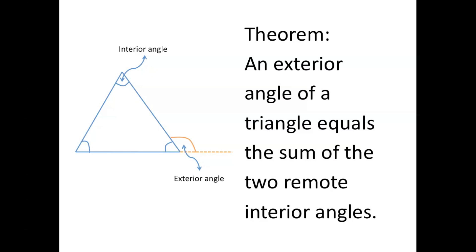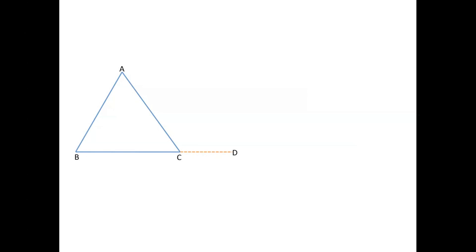So the theorem is saying that this exterior angle here is equal to this angle plus this angle. Now let's add some labels to our diagram.